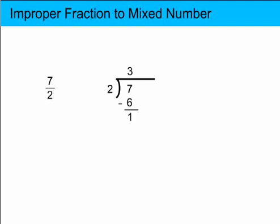Again, 3 is the whole number of the mixed number. 1 becomes the numerator of the fraction with a denominator of 2. The same as in the original improper fraction. So 7 halves is equivalent to 3 and 1 half.